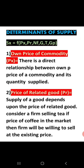Number two: price of related goods. Take the example of substitute goods — tea and coffee. If a tea producer is selling tea and the price of tea rises, then the supply of coffee will fall. Why? Because when the price of tea increases, the supply of tea increases, and automatically there will be a fall in the supply of coffee.